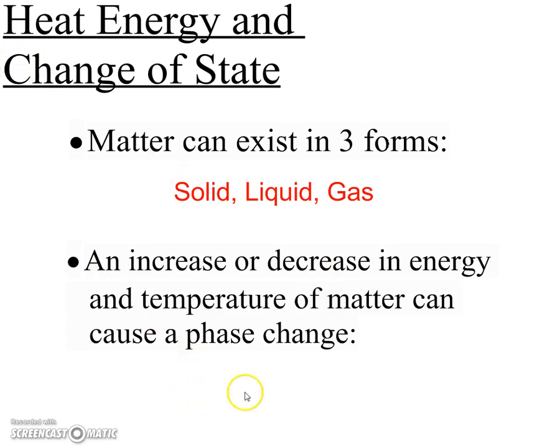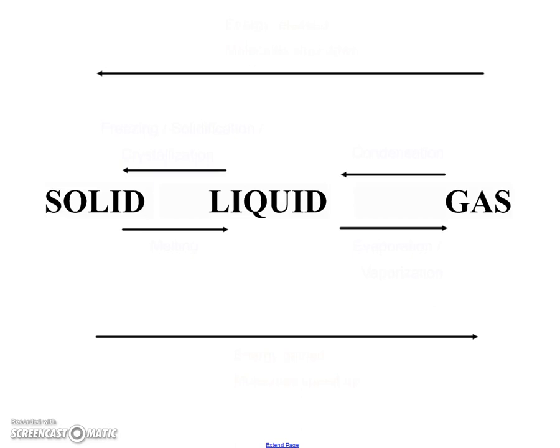So let's review some of the phase changes. We're gonna start from a solid to a liquid. So what's it called when we have a solid and we turn it to a liquid? It's called melting, and if a liquid gets heated up and turns into a gas, that is called evaporation or vaporization.